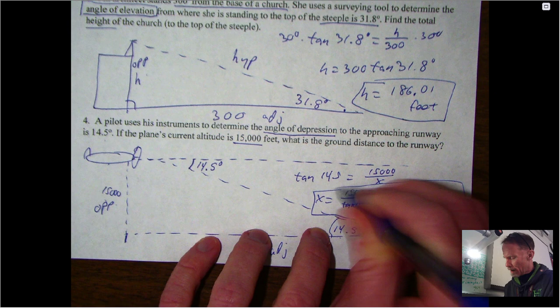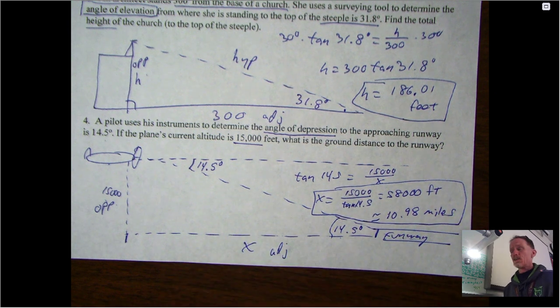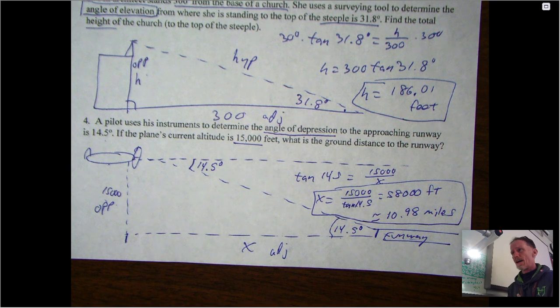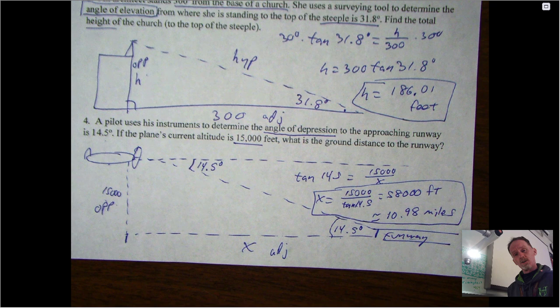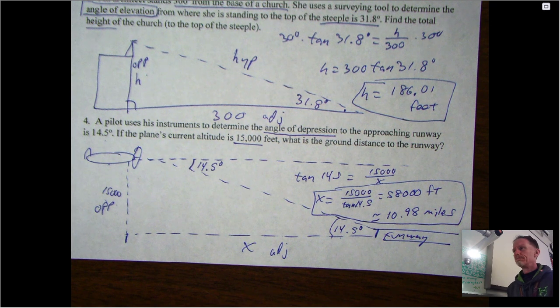So whenever you get a word problem, draw the picture for heaven's sakes. Once you draw the picture it's going to be a right triangle, you can label it from there, and then it's just a SOHCAHTOA question. If you have any other issues or questions, please log into tutoring one morning with me or talk to your teacher. Until next time, stay safe.